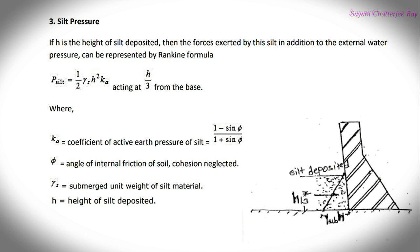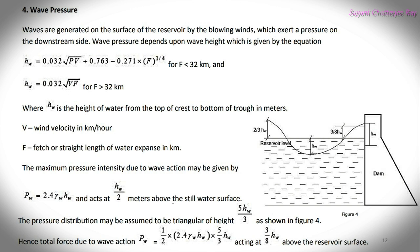If H is the height of the silt deposited, the forces exerted by this silt on the dam, in addition to the external water pressure, can be calculated by Rankine's formula: P_silt = ½ × γ × H² × Ka, where γ is the submerged unit weight of the silt material, H is the height of silt deposited, and Ka is the coefficient of active earth pressure on the silt. This acts at a distance of H/3 from the base.